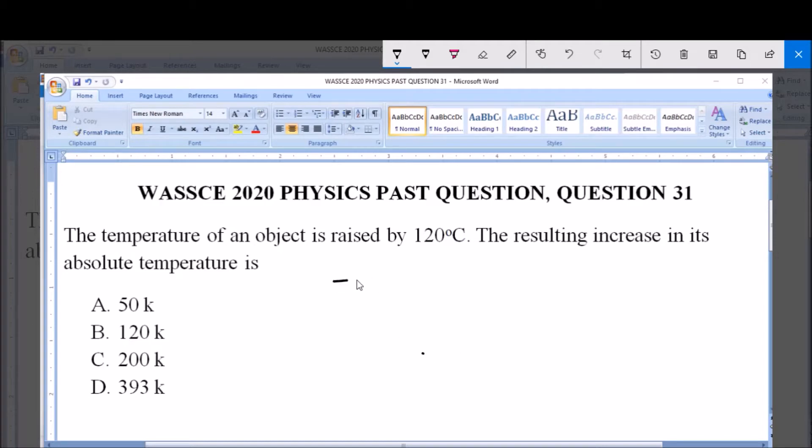Now, the absolute temperature T is given in terms of Kelvin, and this is expressed as 273 plus the value in degrees Celsius.